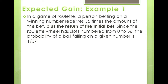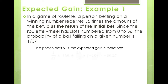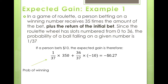In a game of roulette, a person betting on a winning number receives 35 times the bet plus the return of the initial bet. Since the roulette wheel has slots numbered 0 to 36, the probability of the ball landing on a given number is 1/37. If a person bets $10, the expected gain is: (1/37 × 350) + (36/37 × −10), which equals negative $0.27. That accounts for the probability of winning times the net gain of $350, plus the probability of losing times the loss of the initial $10 bet.